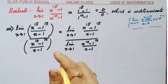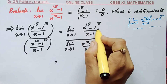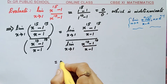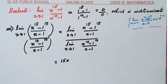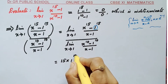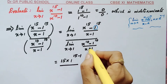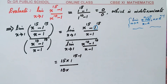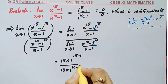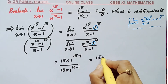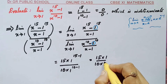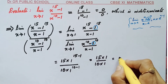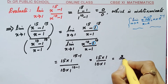Applying the theorem to the numerator: power 15 times 1 raised to (15 minus 1) equals 15 times 1, which is 15. Applying it to the denominator: power 10 times 1 raised to (10 minus 1) equals 10 times 1, which is 10. So the answer is 15 divided by 10, which simplifies to 3 over 2.